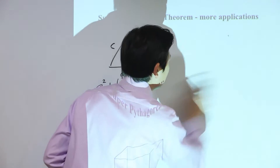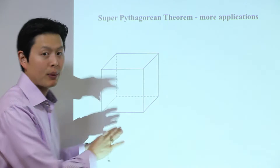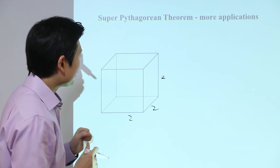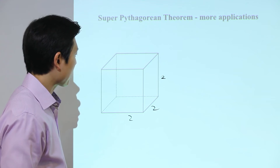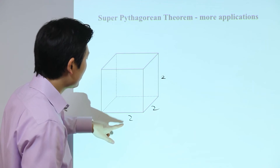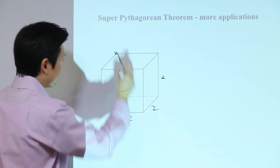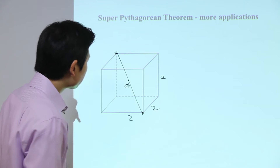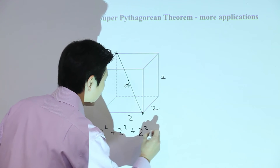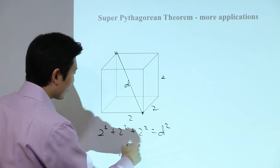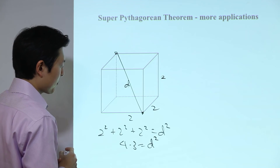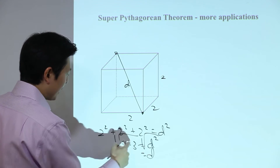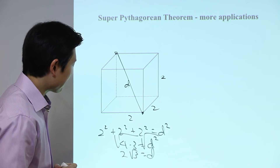Let's try this example. If I gave you a cube — and it doesn't have to be a cube, but I'm going to give the same dimensions: 2, 2, and 2, just to make this first problem easy. To use the super Pythagorean theorem, the dimensions do not need to be the same. But let's say they are for now. We have a 2×2×2 cube. How do we find the longest distance d from one far corner to the opposite front corner? The relationship is: 2² + 2² + 2² = d². That gives us 4 + 4 + 4, so 4 × 3 = d². Taking the square root of both sides, d = √12 = 2√3. So 2√3 is the correct answer.